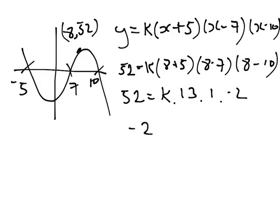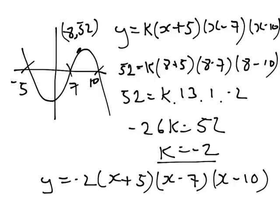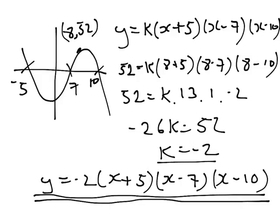Then we drop that back into our expression and we get y equals negative 2, x plus 5, x minus 7, x minus 10. So we cannot assume that this constant k is going to be 1. We have to take a known value from somewhere else on the cubic and replace it into the expression.